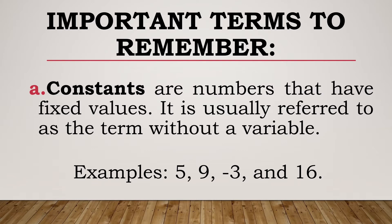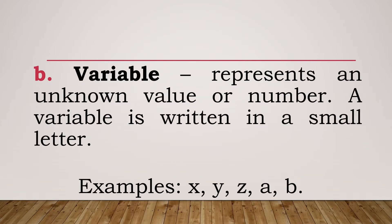Constants are numbers that have fixed values. It is usually referred to as the term without a variable. Examples: we have 5, 9, negative 3, and 16. You can have a positive integer, a negative integer, you can also have zero.